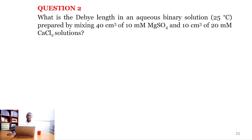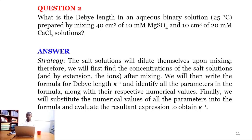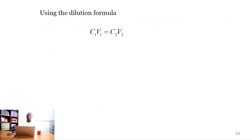Our second question says: what is the Debye length in an aqueous binary solution at 25°C, prepared by mixing 40 cm³ of 10 mM magnesium sulfate and 10 cm³ of 20 mM calcium chloride solutions? Our strategy is straightforward: the salt solutions will dilute themselves upon mixing, so we first need to find the concentrations of the salt solutions and the concentrations of the ions after mixing. We then write the Debye length formula, identify all parameters, and substitute numerical values to obtain κ⁻¹.